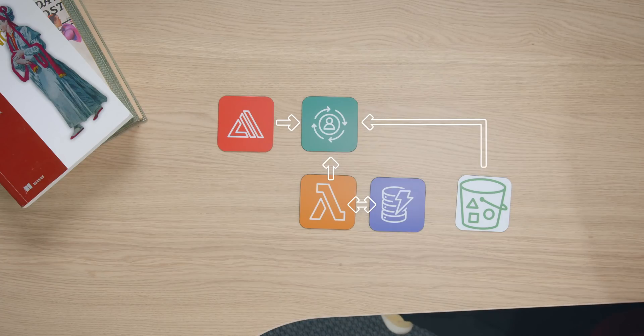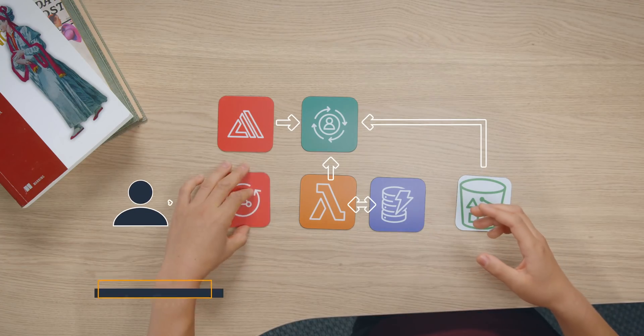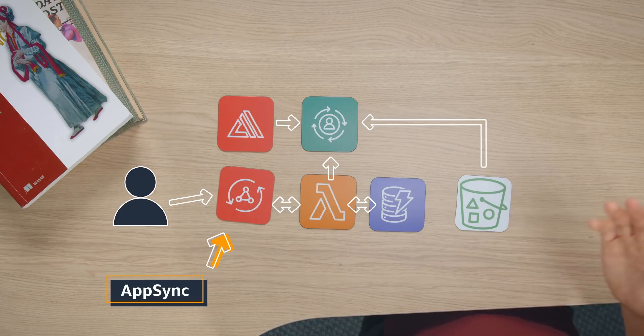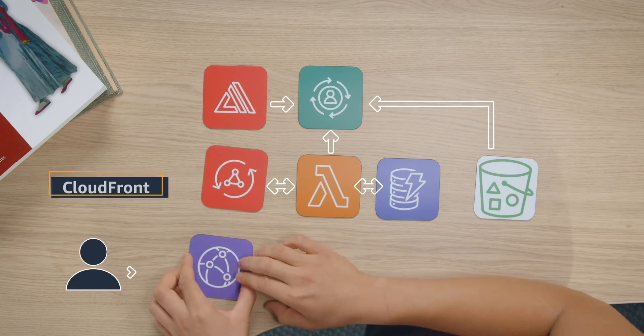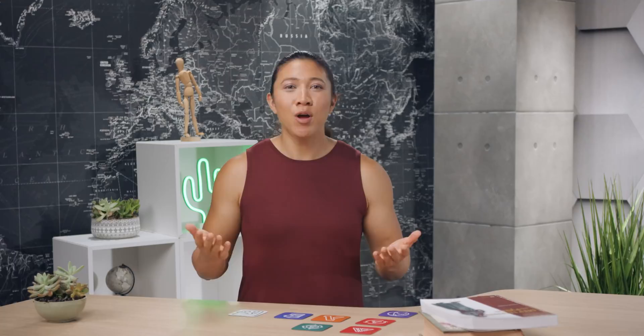AWS AppSync will simplify the process of resolving your Lambda function. AppSync automatically updates your data in web and mobile applications in real time. You want your users to have as little latency as possible — because who has time to wait for their favorite course, website, or cat meme to load? CloudFront is a fast content delivery network. Wherever your customers are making a request, they'll get routed to the optimal CloudFront point of presence.